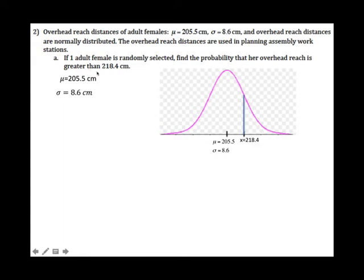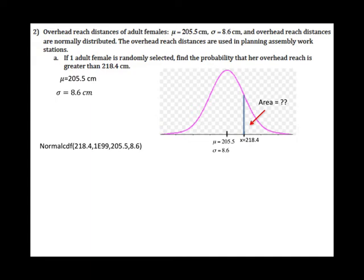Sketching the graph: x = 218.4, and we want to find the area that is greater than that — so we're looking for the area to the right. Given x, find the area using normalcdf starting from 218.4 to the upper value of 1E99, then state the mean and standard deviation. You should get 0.0668.